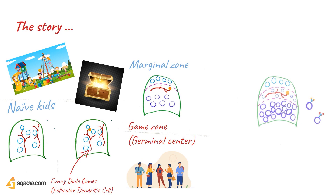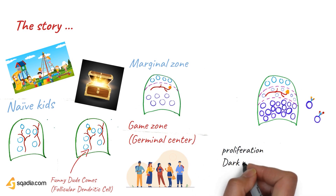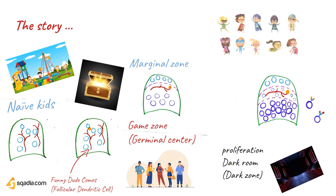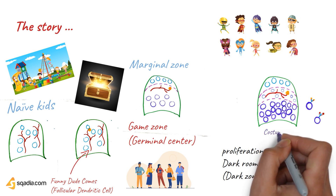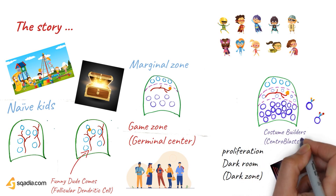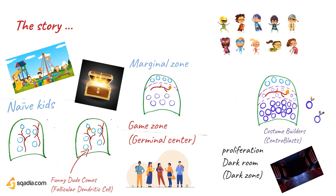The game is so good that more and more kids come and they start proliferating in the dark room down here — the dark zone. The purpose of the game is to make up costumes that perfectly match the jewels of the treasure. The guys in the dark zone are costume builders — CB is a mnemonic to remember centroblasts.